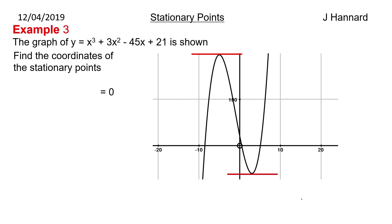Example 3, a little bit more tricky this time. The graph of y equals x cubed plus 3x squared minus 45x plus 21 is shown. Find the coordinate of the stationary points. As you can see on this graph there are two stationary points which complicates things a little bit. So we've got a stationary point up here and we've got a stationary point down here. Because that is where the graph turns. Sometimes stationary points are called turning points, that's where the curve turns.